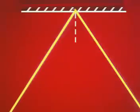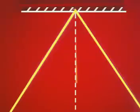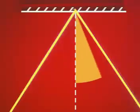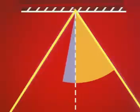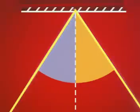The ray of light approaching the mirror is called the incident ray. The one leaving the mirror is the reflected ray. Imagine drawing a line at right angles to the mirror where the beam strikes it. The angle between this line and the incident ray is the angle of incidence. The angle between this line and the reflected ray is the angle of reflection.